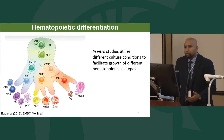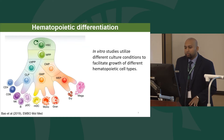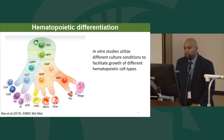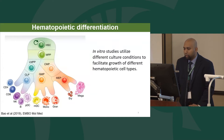Hematopoiesis in the adult occurs initially from hematopoietic stem cells, and all cells of the hematopoietic system arise from these stem cells, which can then differentiate into multipotent progenitors. Through lineage restriction, they form different lineage-restricted populations, which ultimately differentiate further to give all the mature lineages of the hematopoietic system.